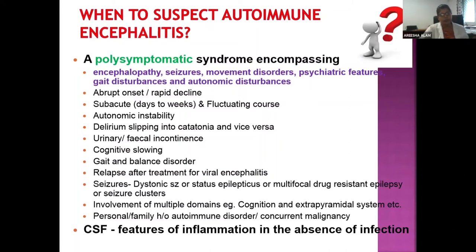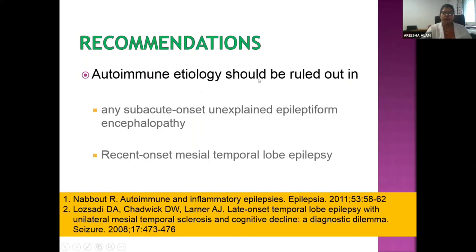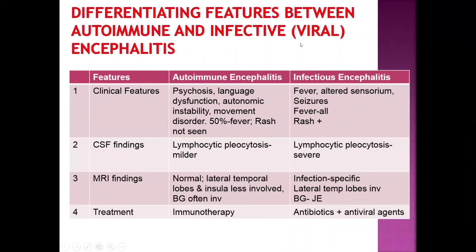Additional red flags include gait and balance disorders in combination with other symptoms, dystonic seizures and status epilepticus after relapse from viral encephalitis treatment, multifocal drug-resistant epilepsy, involvement of multiple domains like cognition and extrapyramidal symptoms, and a personal or family history of autoimmune disorder or malignancy. Recommendations state that autoimmune etiology should always be ruled out in any subacute onset unexplained epileptiform encephalopathy and recent-onset mesial temporal lobe epilepsy.